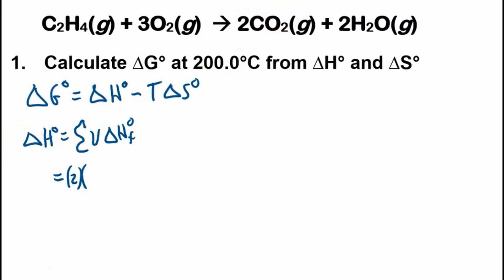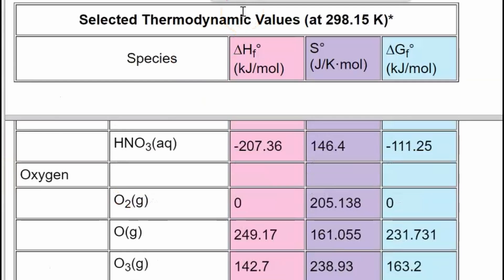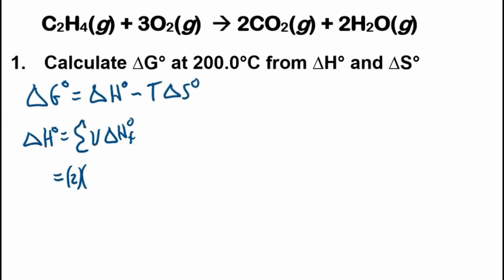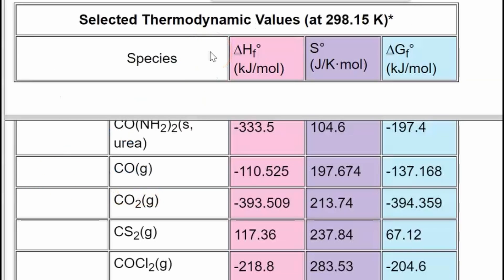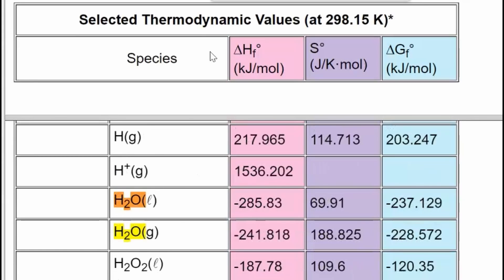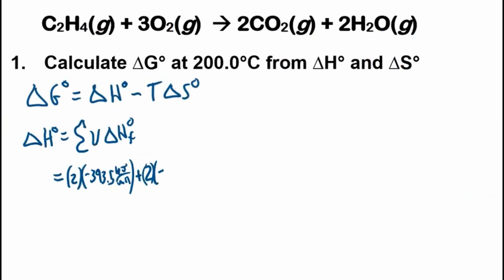The V is the stoichiometric coefficients here, so we'll plug it in. We have 2 times the enthalpy of formation of CO₂, so we'll do CO₂, and then the enthalpy of formation of CO₂ gas is negative 393.5 kilojoules per mole, plus 2 times H₂O gas. Now it's important that this is gaseous water, we don't want to include liquid water. H₂O gas is negative 241.8 kilojoules per mole.